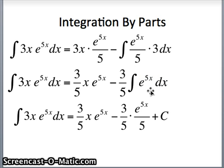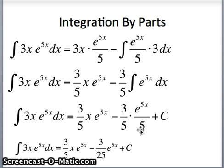And now we're able to go ahead and simplify this. First part is already simplified. 3 fifths times 1 fifth will be 3 twenty-fifths e to the 5x. And that is going to be our solution: 3 fifths x e to the 5x minus 3 twenty-fifths e to the 5x plus c, using integration by parts. And that will conclude this video.